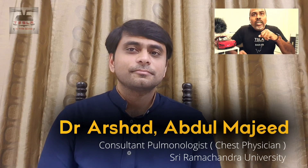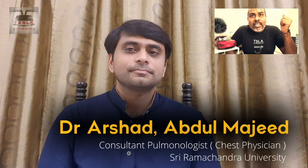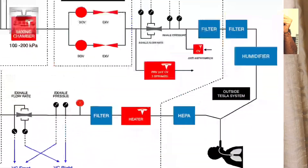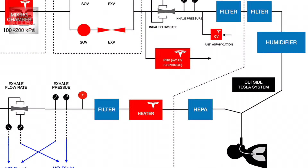Have you had a chance to look at the Tesla ventilator schematic? Yes, it's a standard schematic diagram. What I see there is the filters and the HEPA filter being out and the humidifier being out — probably those are the outsourced parts of the ventilator. Thank you, Doc. It is very heartening when you say it is a standard ventilator — not a shortcut ventilator but one that can be used properly even in a non-COVID situation, isn't it?